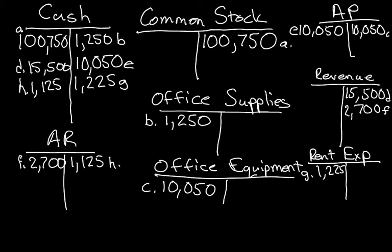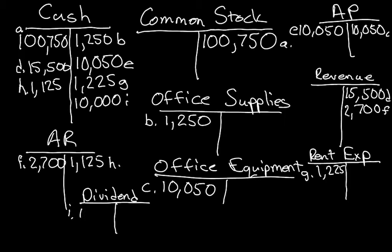The final transaction: the company paid $10,000 cash in dividends to Spade, the shareholder. The company paid out $10,000 — cash decreased. Cash is an asset account, so in order to decrease an asset account you credit it. The last account to enter is the dividend account, and that account increased. In order to increase a dividend account, you debit it.